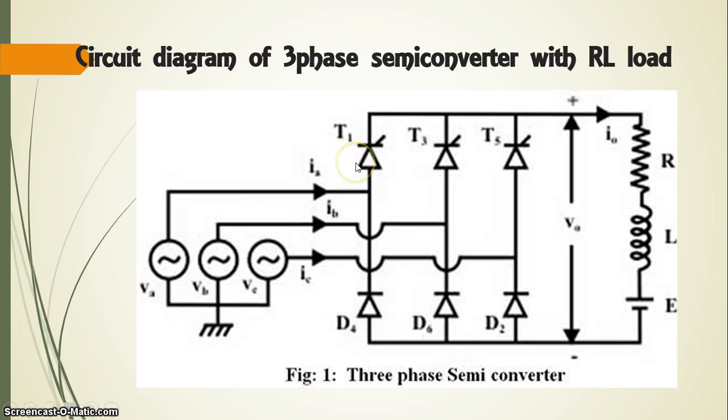When thyristor T1 is triggered, T1 starts conducting. The phase voltage VAN appears across the load when T1 conducts. The load current flows through the supply phase winding AN and through thyristor T1 as long as T1 conducts.